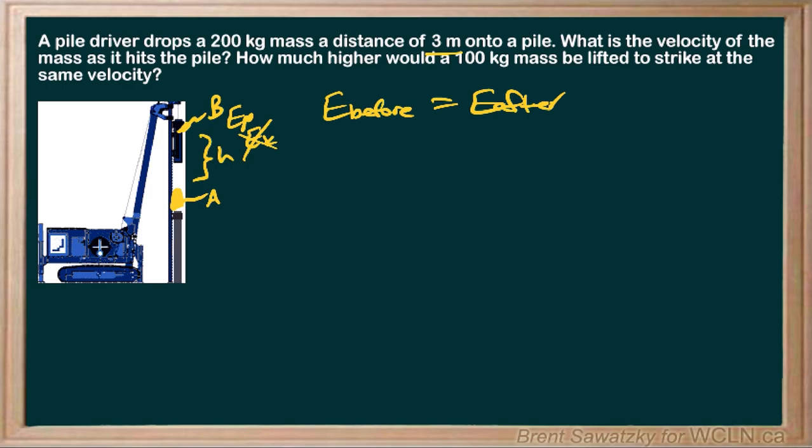On the other hand, when it drops down we'll consider this our reference, so the potential energy would be zero at that point, but we would definitely have kinetic energy just as it's going to hit that pile. Before we have potential energy and that gets converted into kinetic energy: mgh equals one-half mv squared.